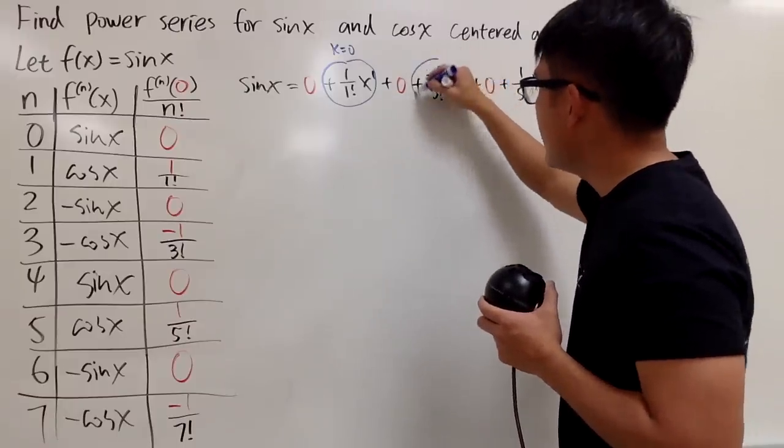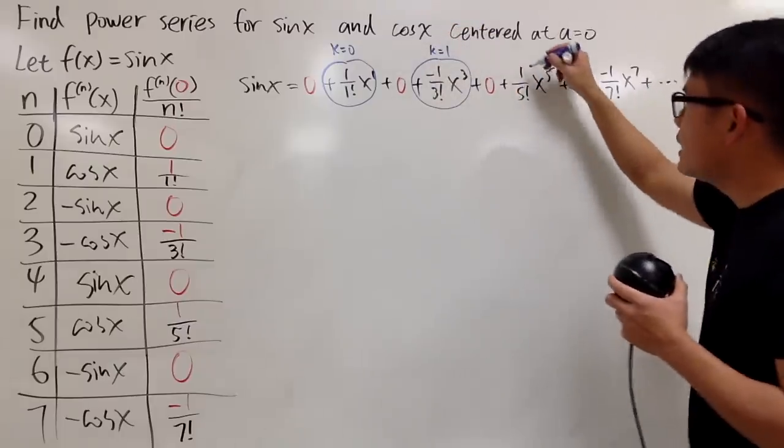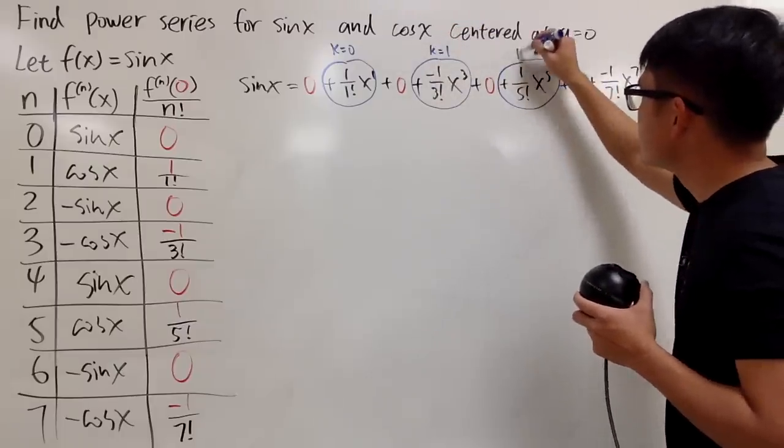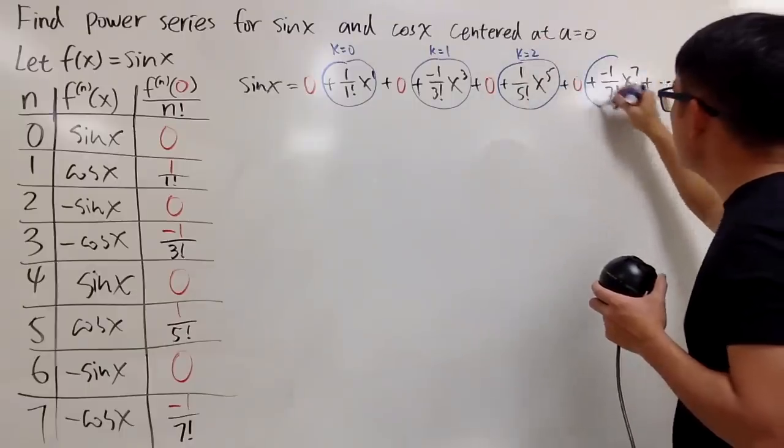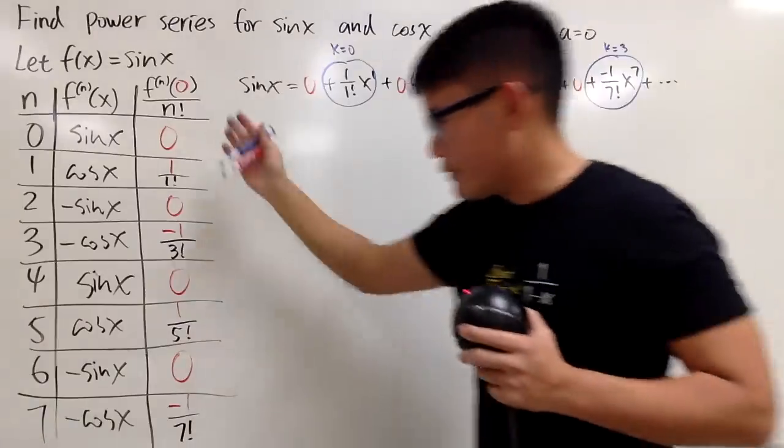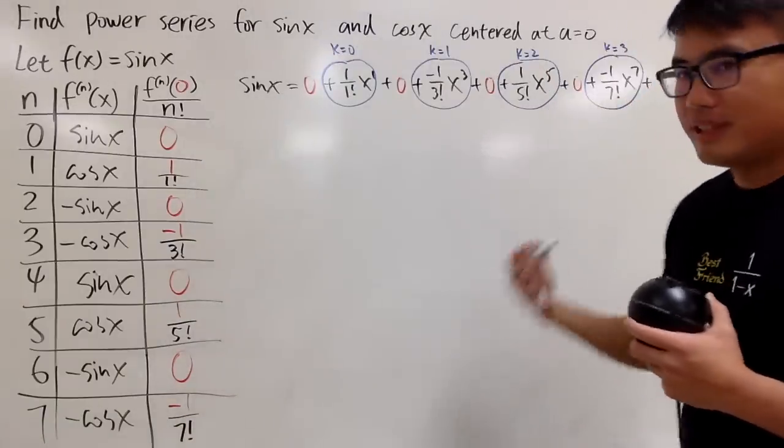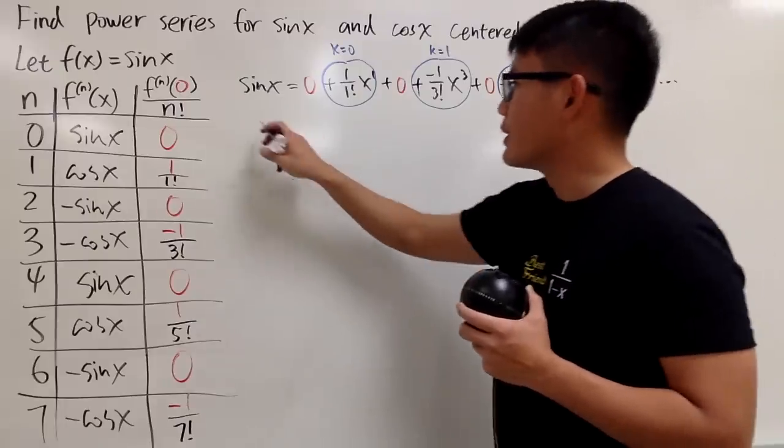This right here is technically my k equals 0. This is my first term. Next, I will ignore that zero, and then I will look at this, and I will say, this is my k equals 1, and then continue. This right here is k equals 2, and then you have k equals 3. This is why we have to have this many entries.